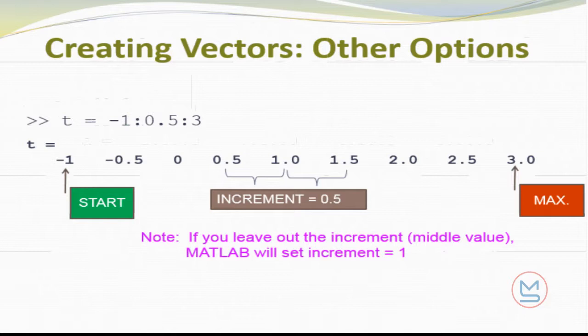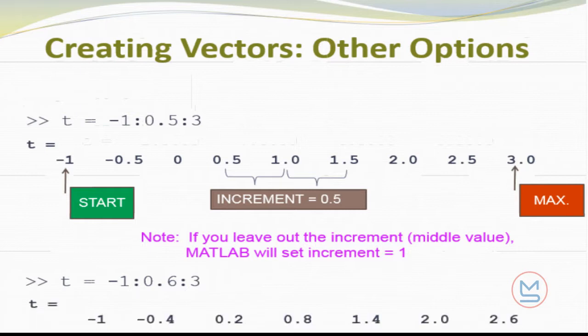You can leave out that middle number. If you leave the middle number or the increment out, MATLAB will just assume that you want that increment to be 1. You can also have that increment be a negative number, in which case you're actually decrementing through your vector rather than incrementing. Here's a second example. So my starter value is the same, and my maximum value is the same, but that middle value, the increment, is a little bit higher at 0.6 in this case. Here's what I get. Again, my first value is minus 1, and you can see that I'm incrementing each time by 0.6, but in this case, my very last value is 2.6, it is not 3, and the reason for that is if I get to 2.6 and I add another 0.6, that would take me to 3.2, which exceeds my maximum value, so this one terminates at 2.6.